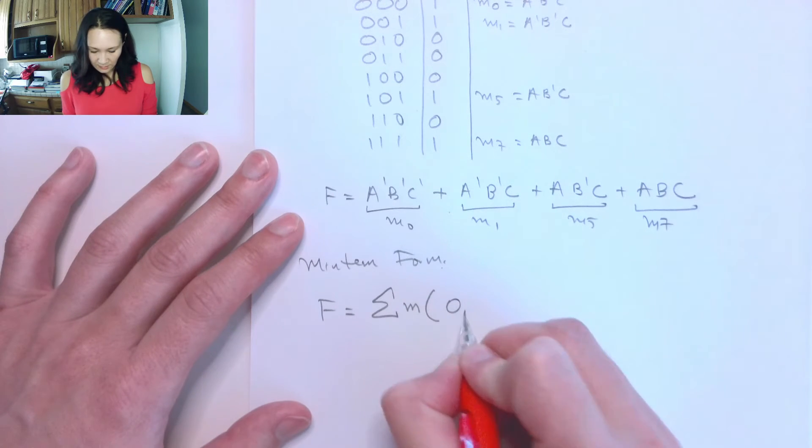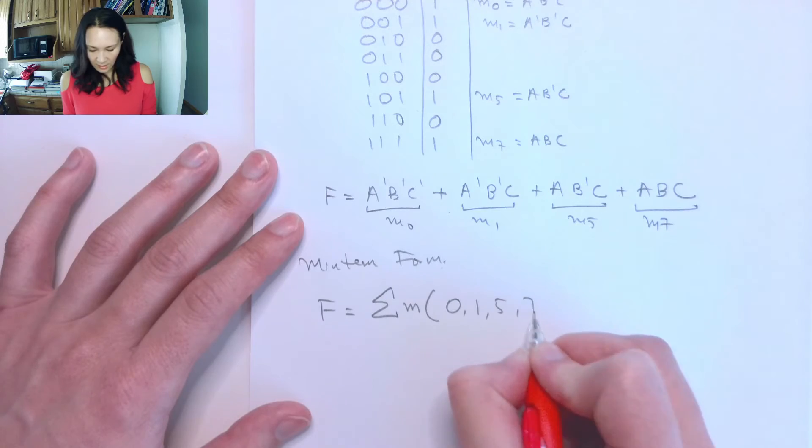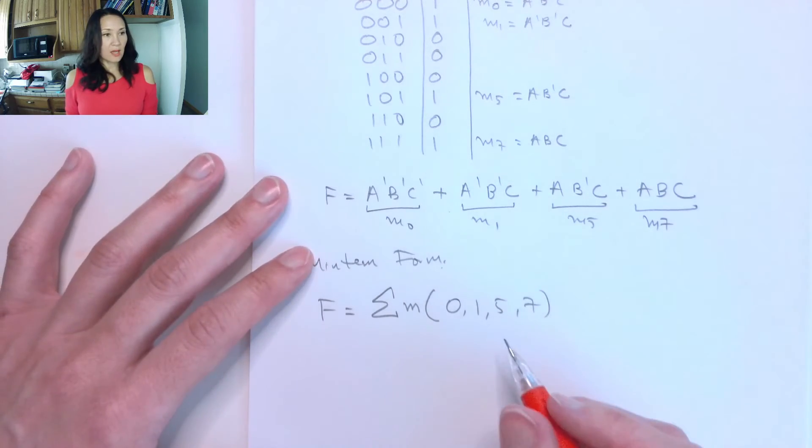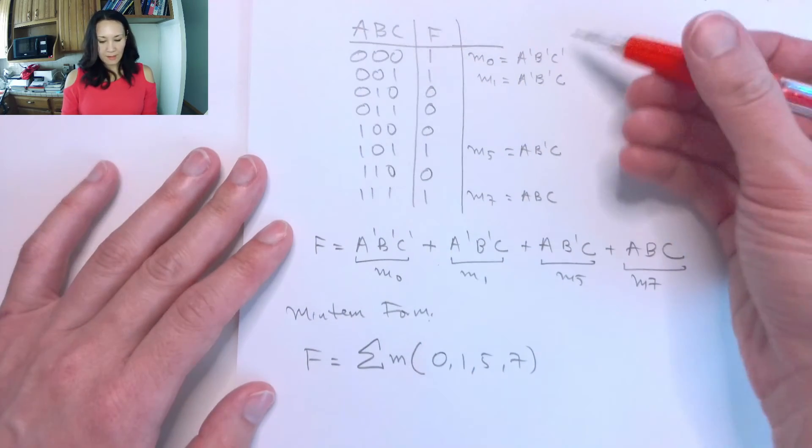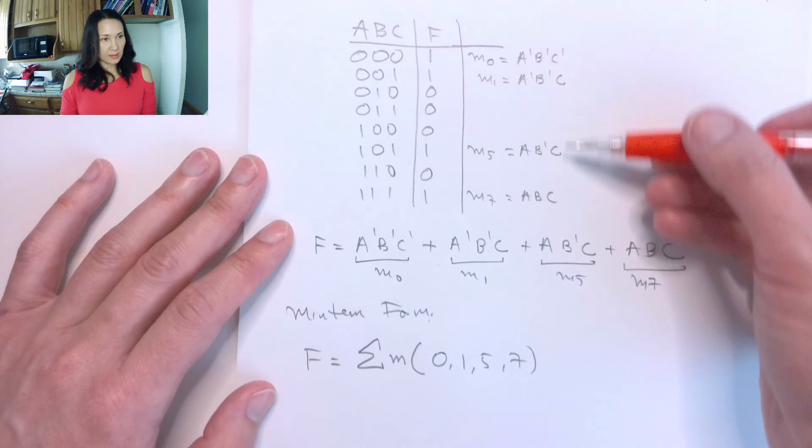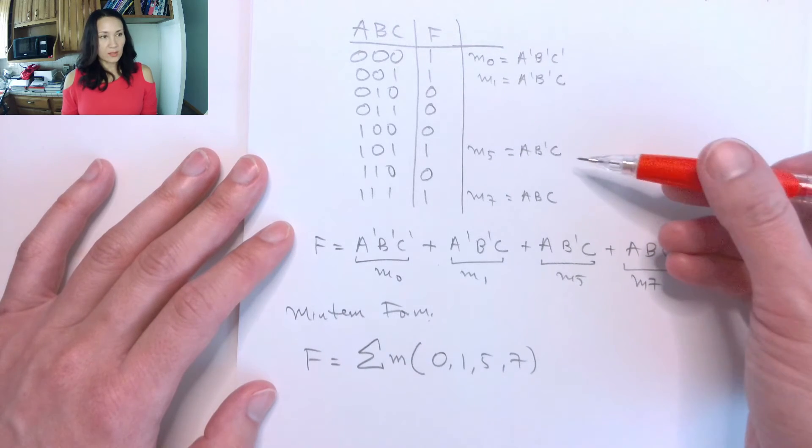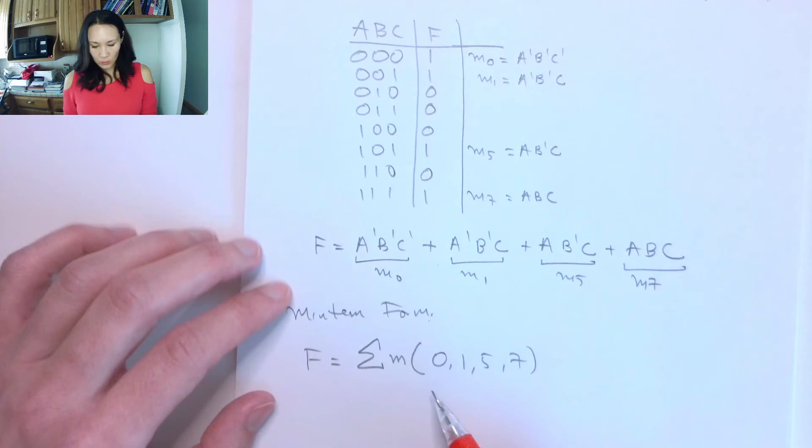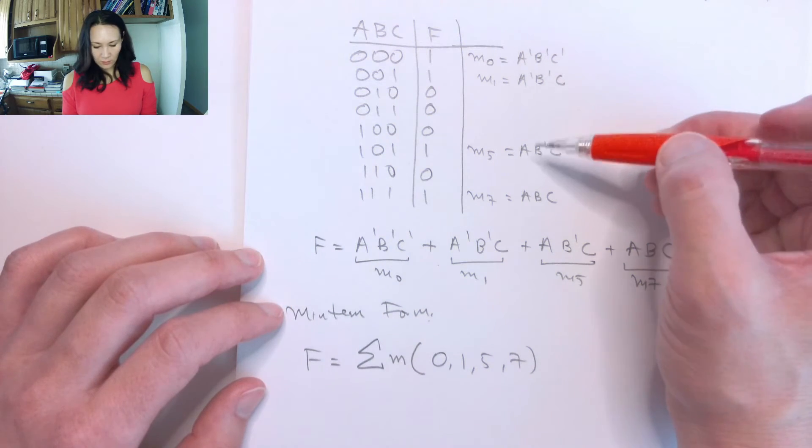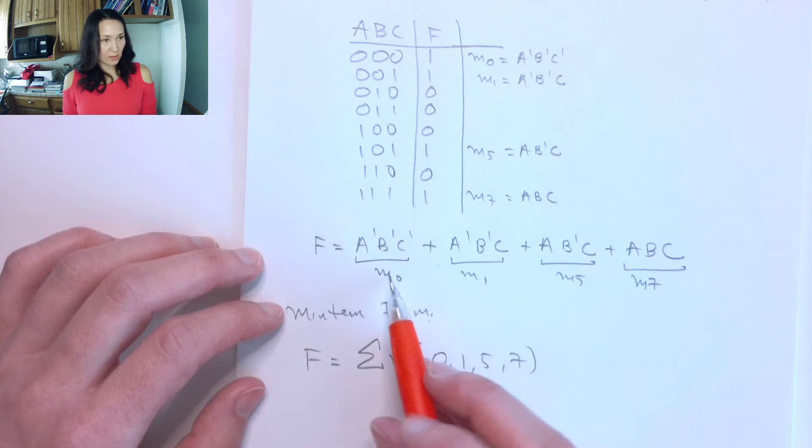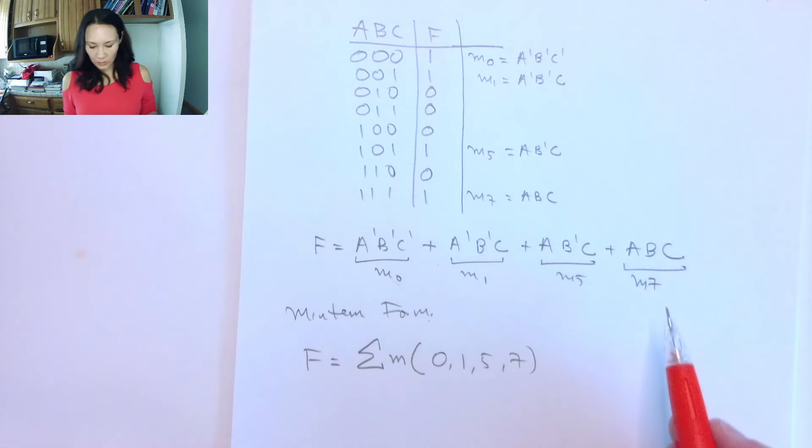So this is going to be 0, 1, 5, and 7. This tells us that if we looked on this list of min-terms, the ones that we would need in order to get a true on f would be the 0th, the 1st, the 5th, and the 7th. And we just add all those together, and that gives us our function here.